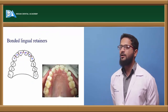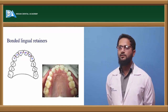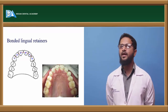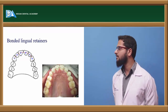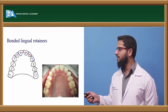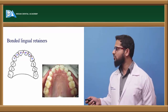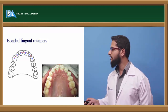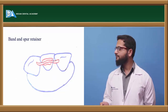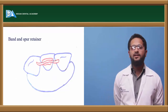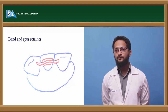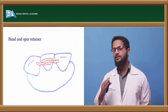Bonded lingual retainers consist of directly bonding the retainer onto the palatal or lingual aspect of the teeth. Stainless steel wire or blue Elgiloy wire is most commonly used; prefabricated lingual bonded retainers are also available. These are bonded from canine to canine on the lingual aspect of the teeth.